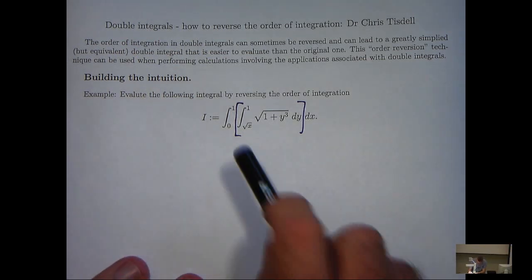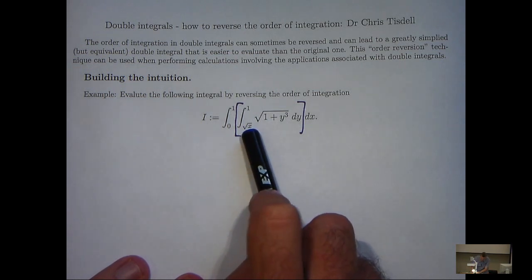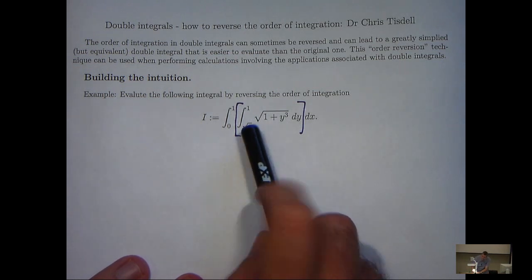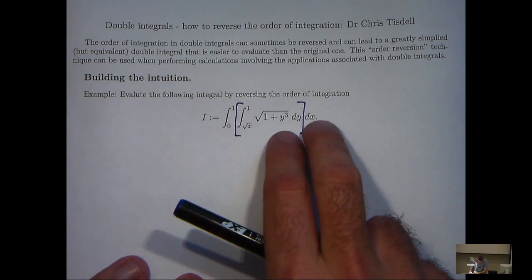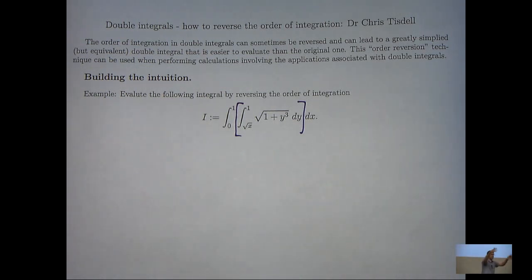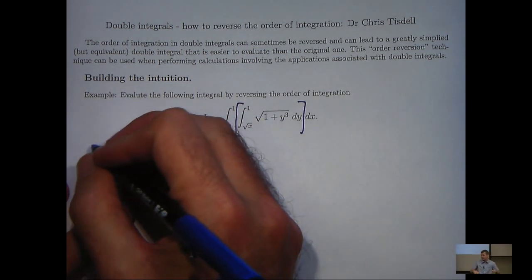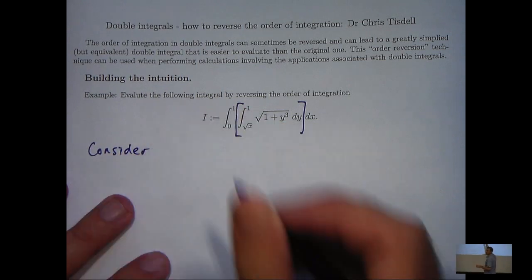Notice that this lower limit of integration is non-constant — we've got a root x there. If we did have a constant here, then we could just switch the integral signs and switch the differentials by applying Fubini's simple theorem for rectangles. However, we can't do that in this case. So what we're going to do is analyze our region of integration.